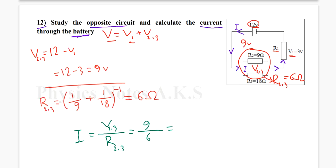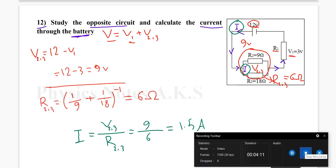9 over 6 equals 1.5 amperes. So it is the current inside the parallel combination, the total current in the parallel combination, which is the same current through the battery. I hope it's clear. If you have any question or comment, please leave it under the video. Have a nice day.